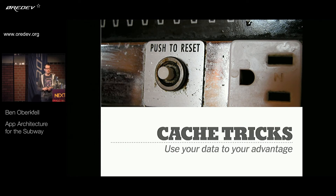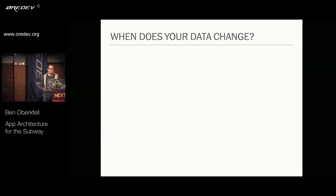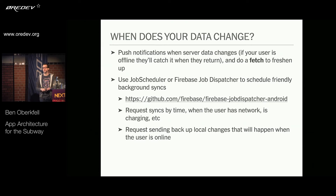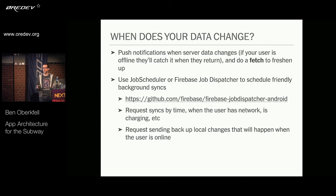Another thing you can do is use your data to your advantage for offline scenarios. Think about when your data changes — you might be able to send a push notification when server data changes. If your user is offline, the push will land when they're back on network and you can do a fetch to freshen the data. You can also use JobScheduler or Firebase Job Dispatcher to schedule friendly background syncs. After making progress in your app or saving a record to sync, you can create a scheduled job. If there's network it goes right through; otherwise, when network access returns it wakes up and fires that job.